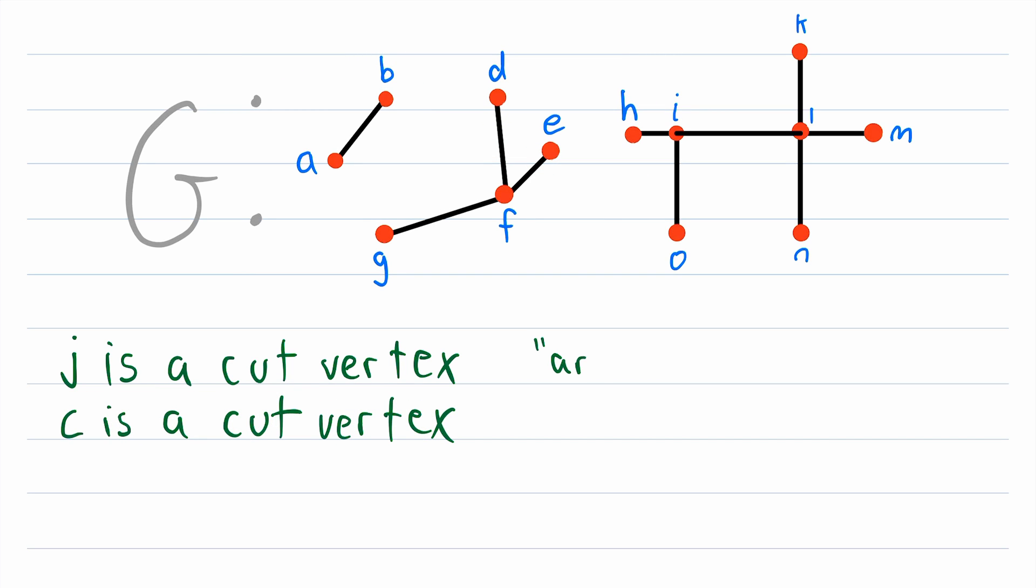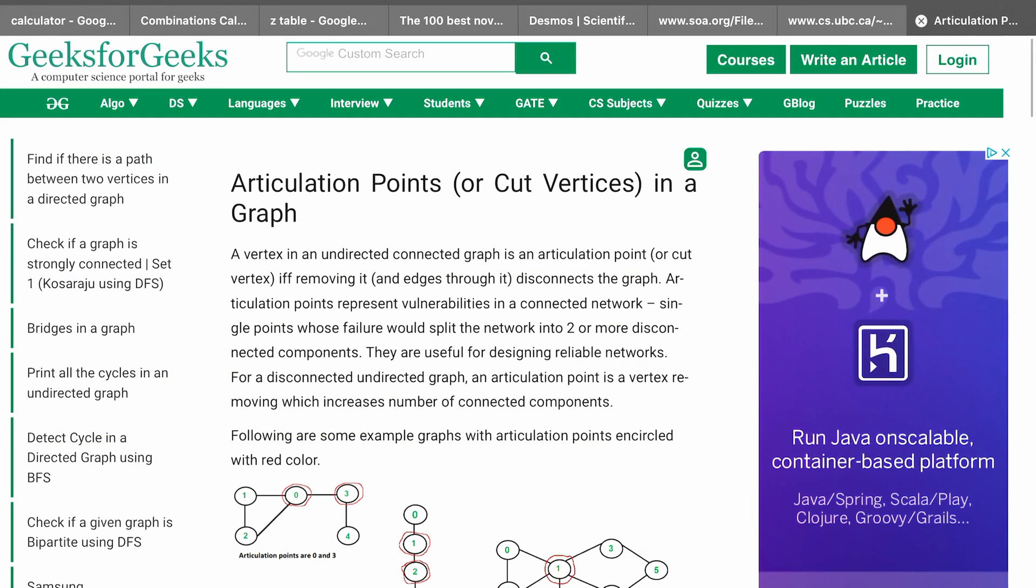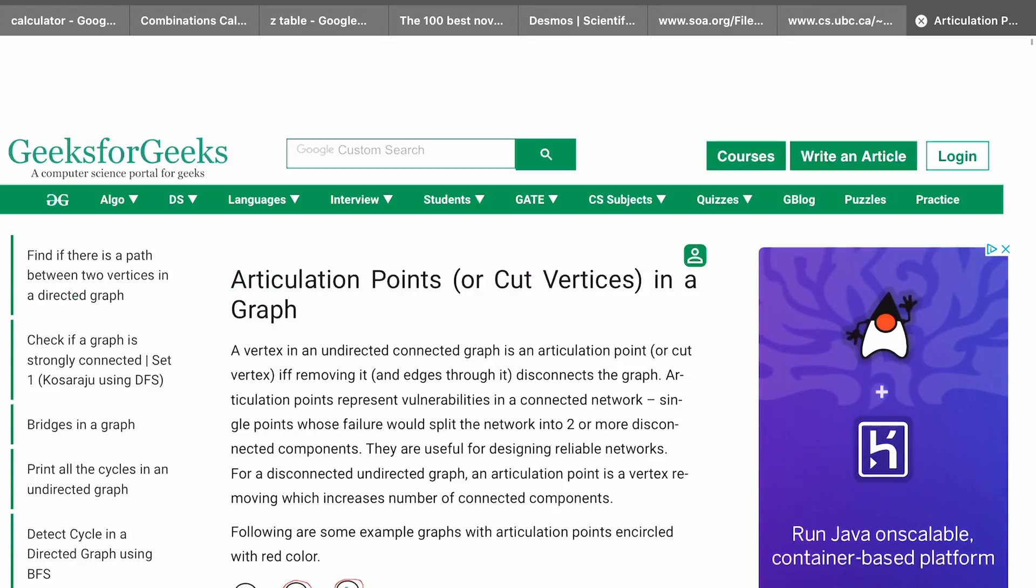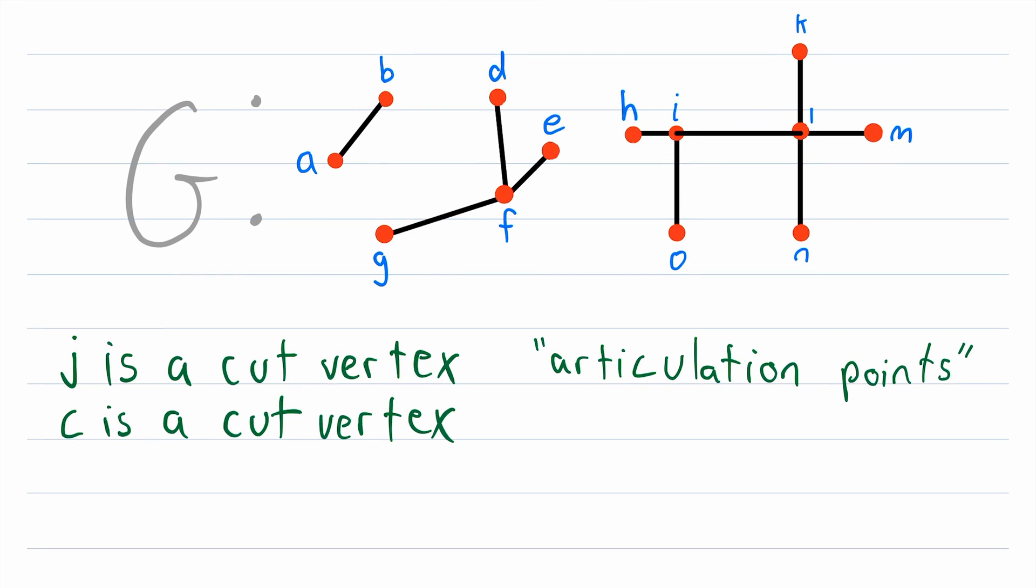Cut vertices are also sometimes called articulation points. And I like how this website geeksforgeeks phrases it. It says that an articulation point, or a cut vertex, represents a vulnerability in a connected network or graph. Because if that cut vertex gets removed, then the component it belongs to becomes disconnected.